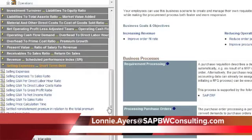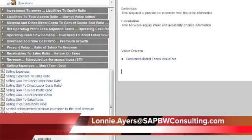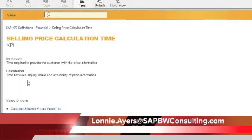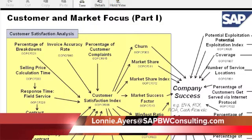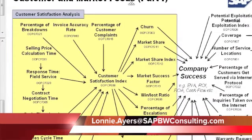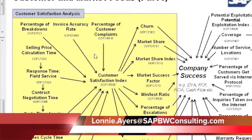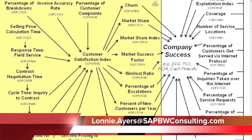A typical one: selling price calculation time — perhaps you're using Sabre and it takes a while to do that and they want to see how it's working. So we're just going to click on that and it comes up over here on this side of the pane. The value drivers — all it does is give you a definition calculation between inquiry intake and availability price information. And it comes up with this PowerPoint that actually never changes but it's available over and over again. It's really a handy KPI tree. If you don't know the DuPont model, this is another way of looking at it. This will tell you the different feeder KPIs that go into it, and there's actually a whole chain of these that you can pull out of the system and kind of explore around.